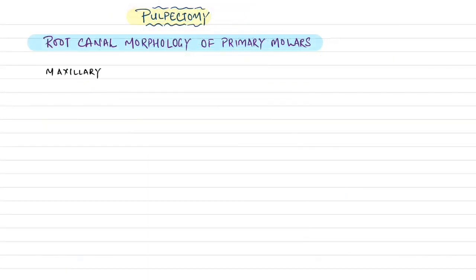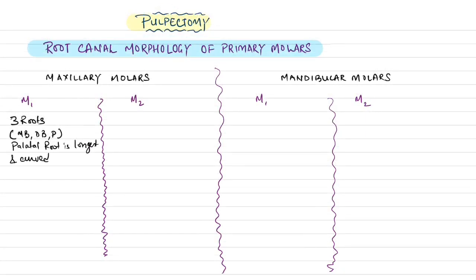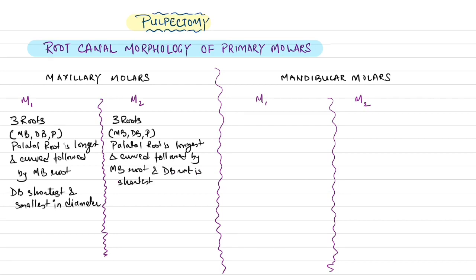The root canal morphology of primary molars is quite complex. The maxillary first deciduous molar has three roots — mesiobuccal, distobuccal, and palatal — with the palatal root being the longest and curved, followed by the mesiobuccal; the distobuccal is the smallest. The maxillary second deciduous molar similarly has three roots — mesiobuccal, distobuccal, and palatal — with the palatal root longest and curved, and the distobuccal being the shortest and roundest.